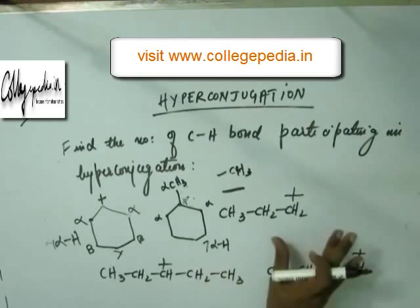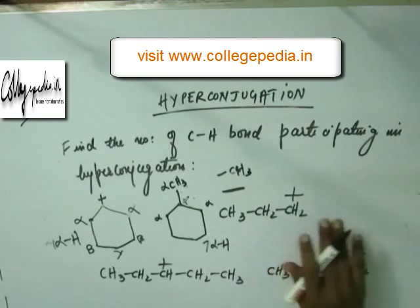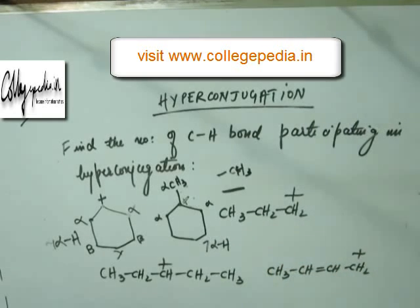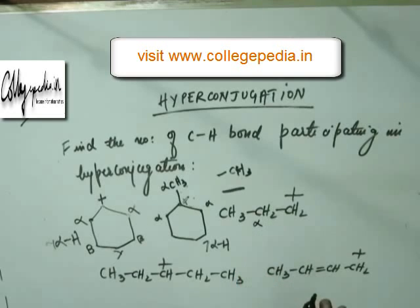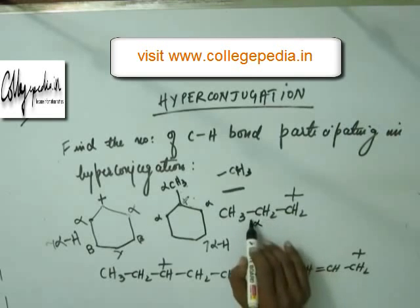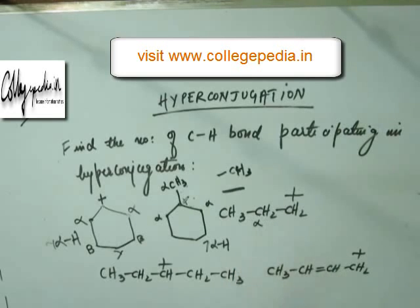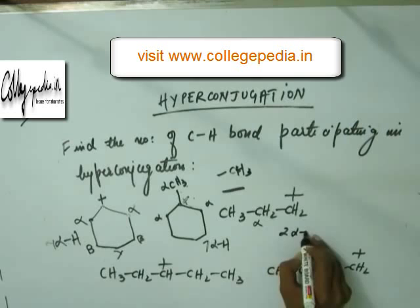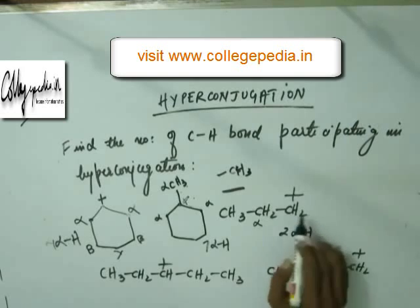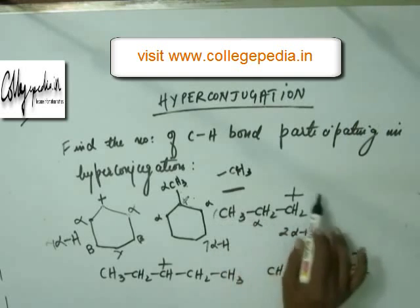If you look at this intermediate, on the right hand side you have no atom, and on the left hand side you have a carbon atom. So this carbon is an alpha carbon with two hydrogens, giving two alpha hydrogens in this intermediate.